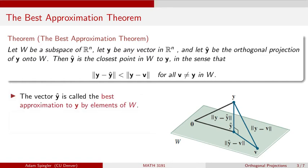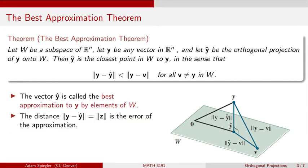We can state this in more practical terms: the projection y-hat is the best approximation to y by elements in the subspace W. The distance from y to y-hat, the magnitude of the vector z, is going to be the error of that approximation. Let's take a look at an application on the next slide.